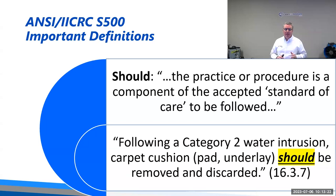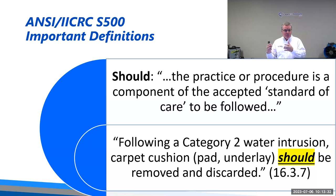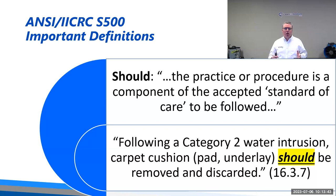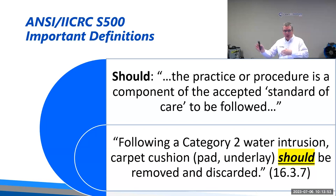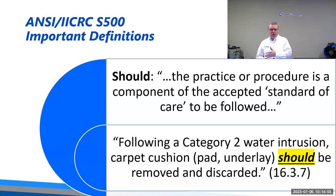'Should' means that if it says should or should not, that is part of the standard of care. The consensus body and the peer review process have said this needs to be done — this is how it would be done by prudent restorers. An example: following a category two water intrusion, carpet cushion/pad underlay should be removed and discarded. So I can read into that — if it's a category one loss, I can save the cushion. But once it's category two, that pad needs to be removed and taken out.